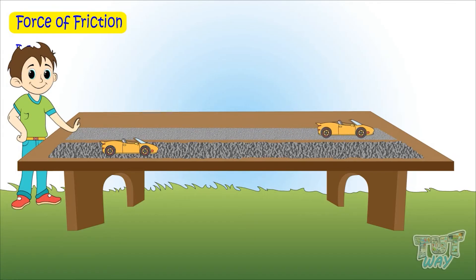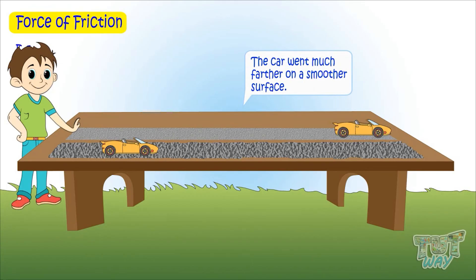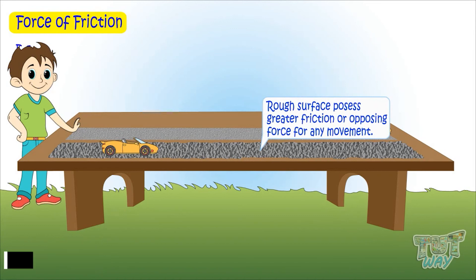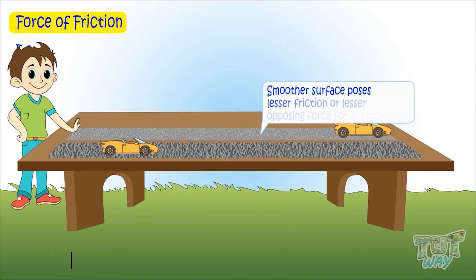What are the results? The car went much further on a smoother surface. It is because the rough surface poses greater friction or opposing force for any movement and the smooth surface poses lesser friction or lesser opposing force for any movement.